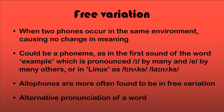Free variation is, in layman's terms, an alternative pronunciation of a word. When two phonemes occur in the same environment causing no change in meaning, we say there is free variation. For example, the first sound of the word 'example' — we pronounce it as 'example' and also 'example.' Both E and A are possible and are said to be in free variation with no change in meaning. Similarly, 'Linux' is sometimes pronounced 'Linux' — E and I are in free variation, not contrastive distribution.